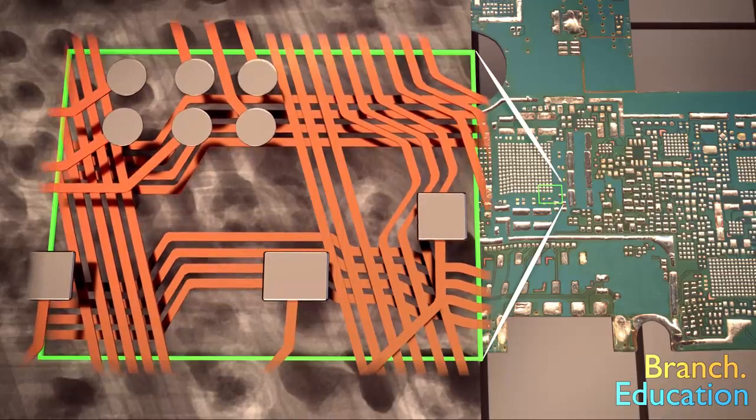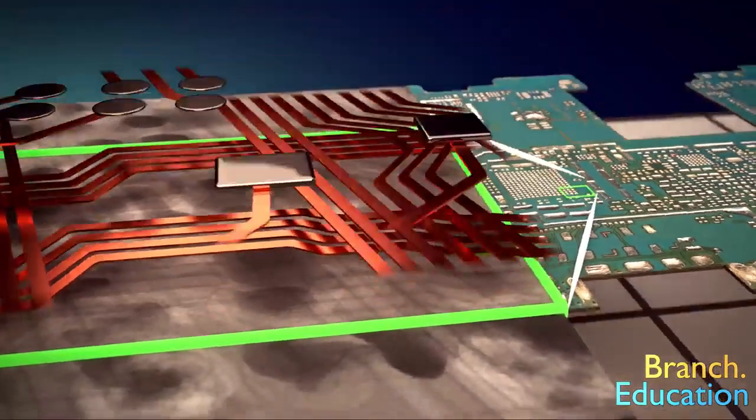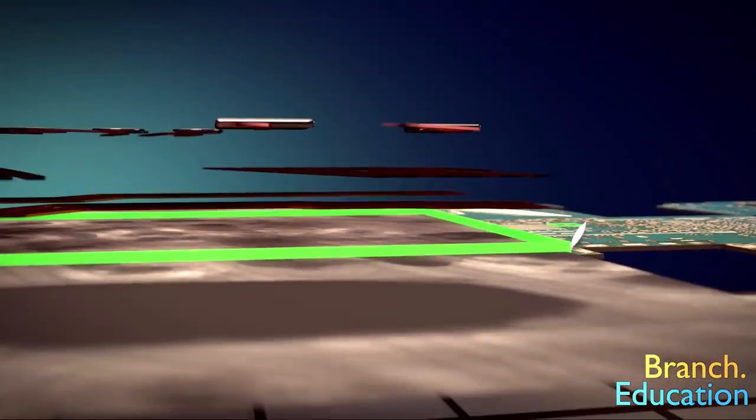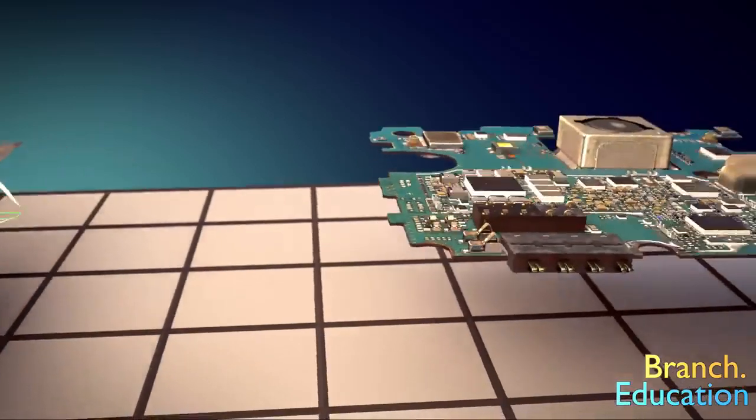In this x-ray image, you can see multiple layers of wires, all on top of each other, but they are not actually touching.